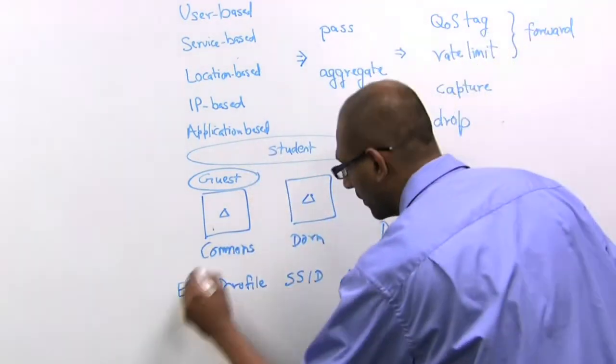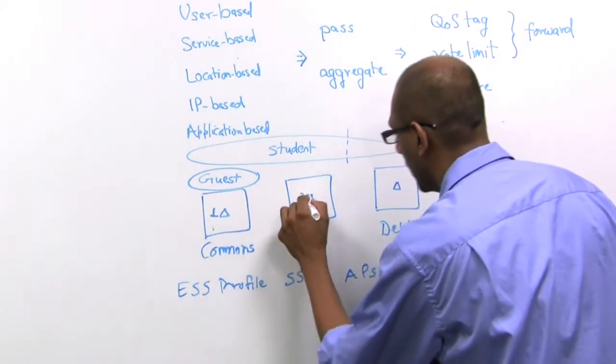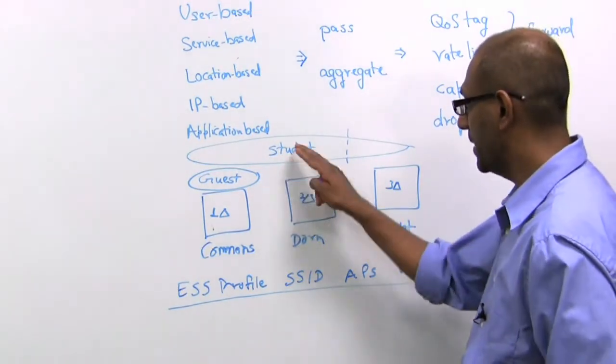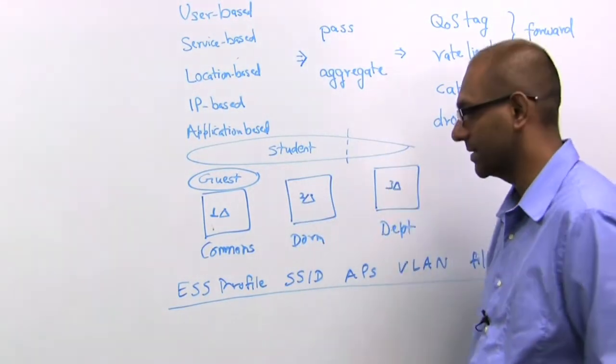So taking this example, let's say this was AP 1, 2, and 3. Taking this example here, we have three ESS profiles and two advertised SSIDs.